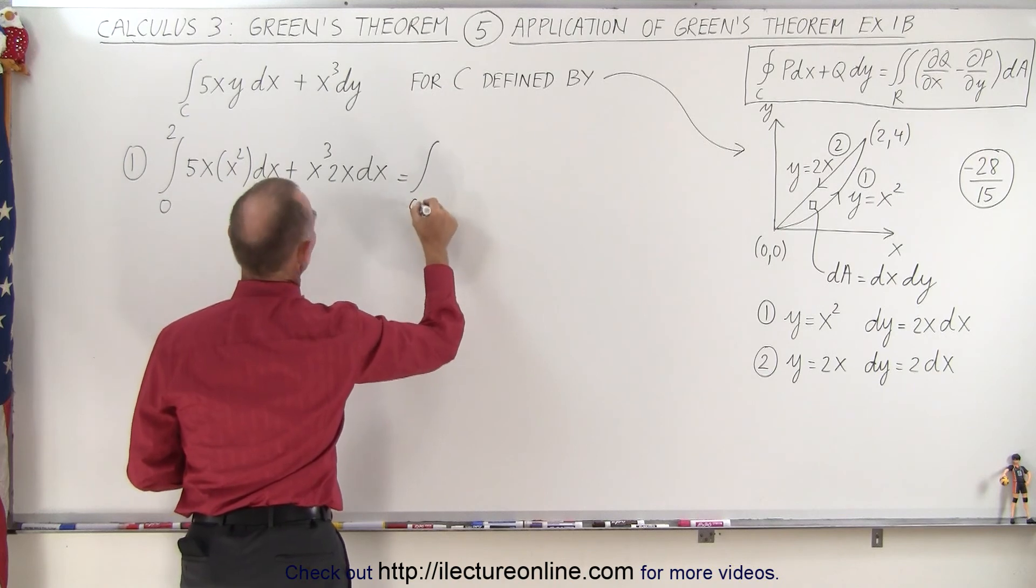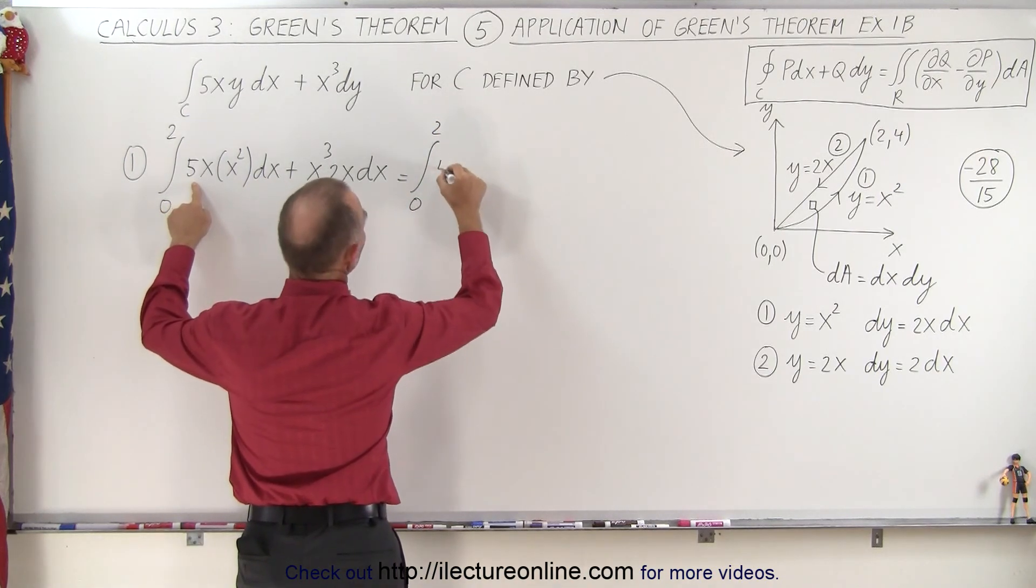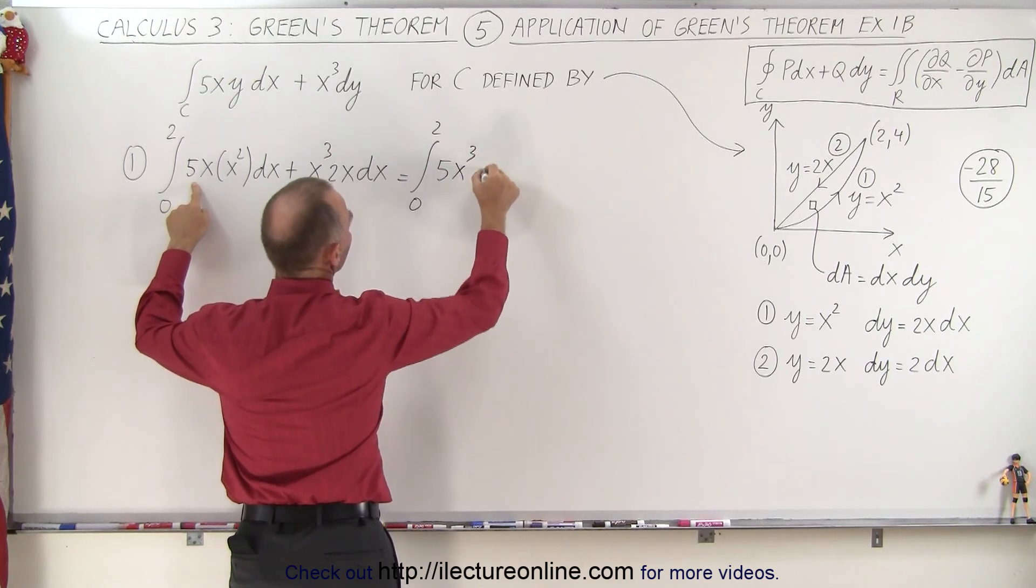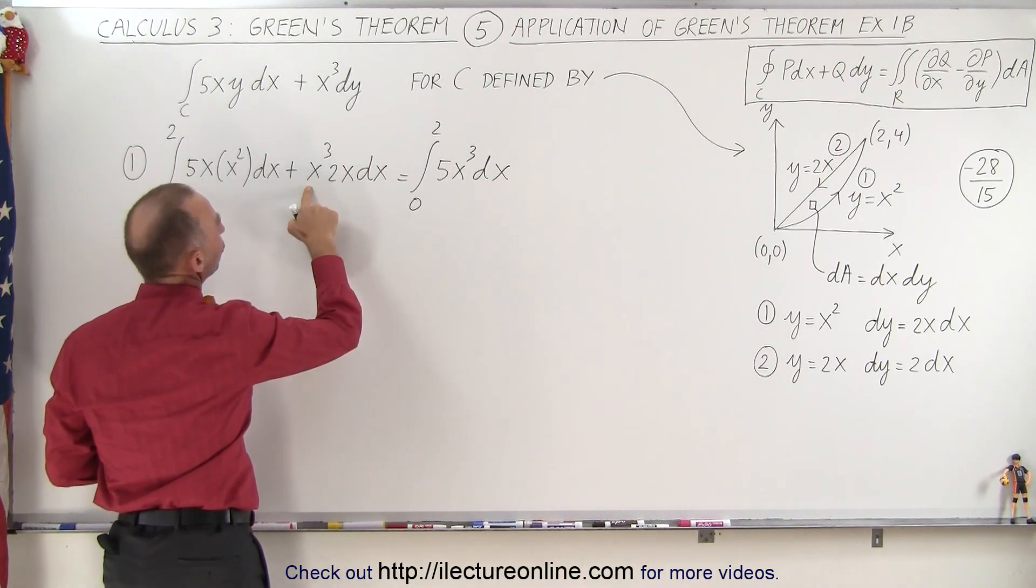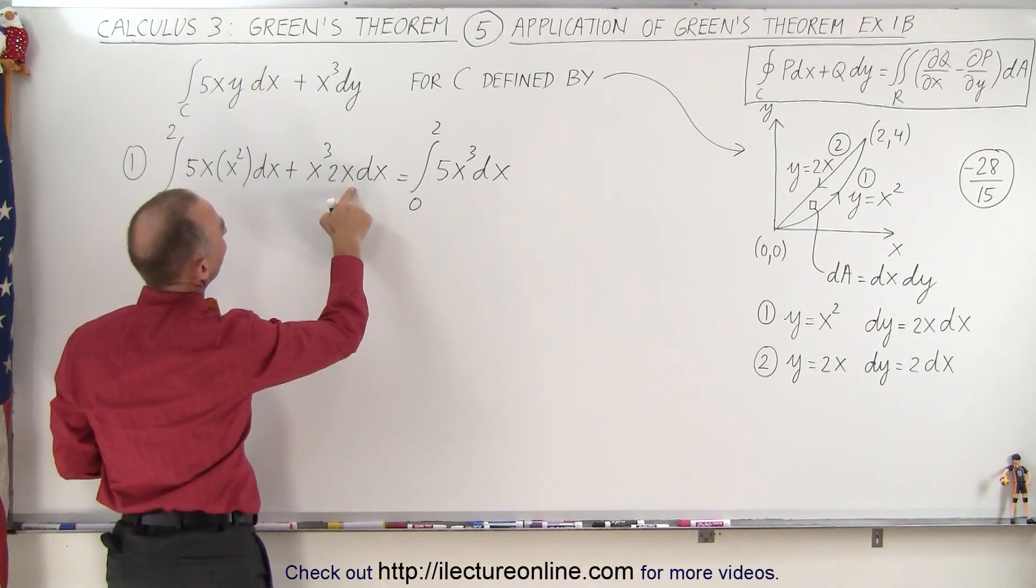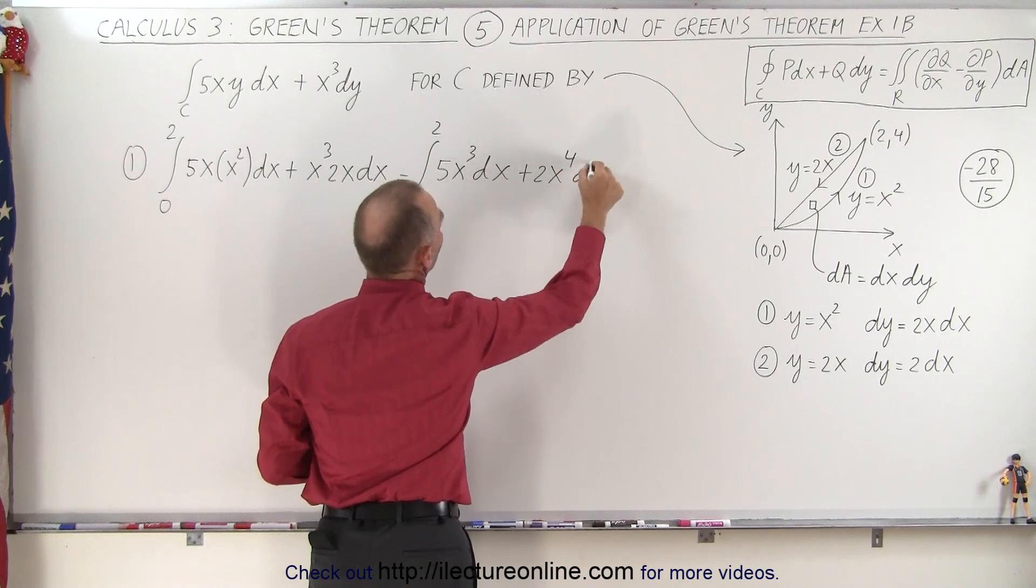Let's go ahead and simplify that a little bit. This is equal to the integral from 0 to 2, and here we have 5x cubed dx. And then over here we have 2x to the 4th, so plus 2x to the 4th dx.